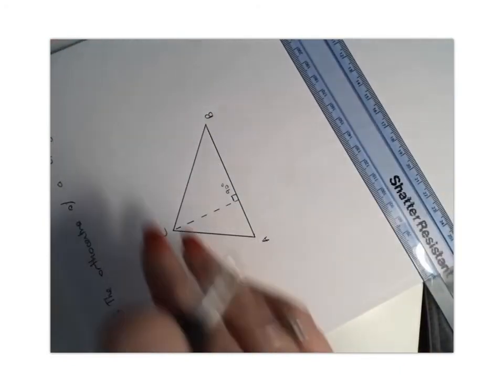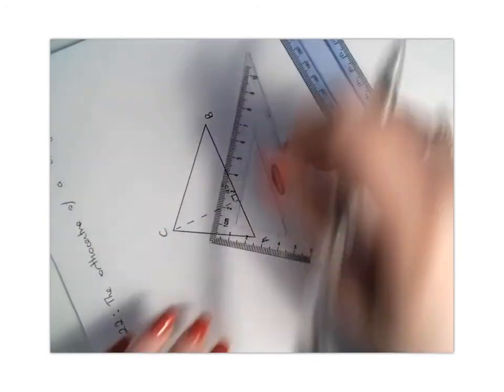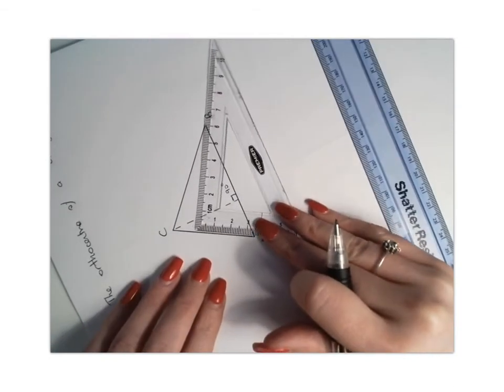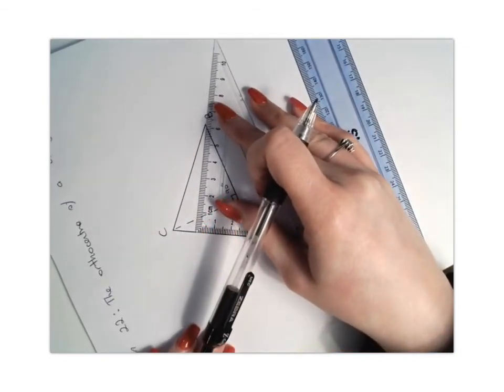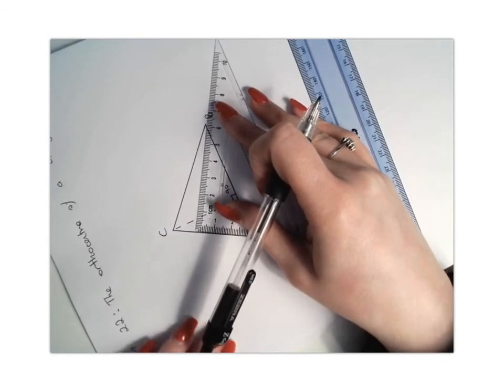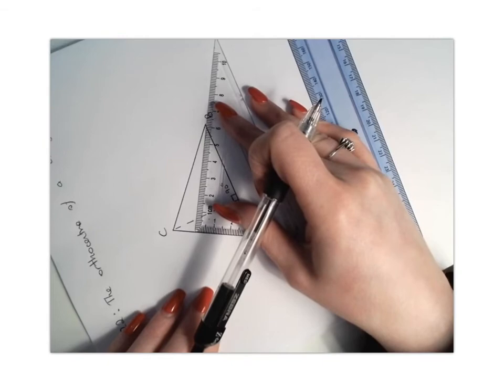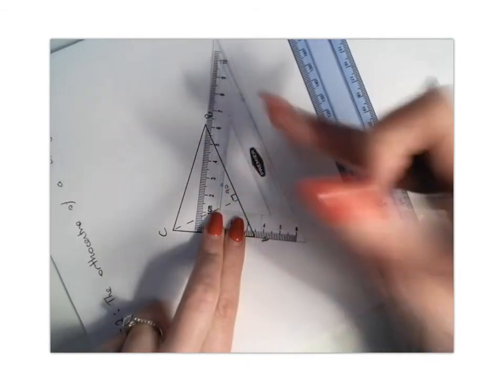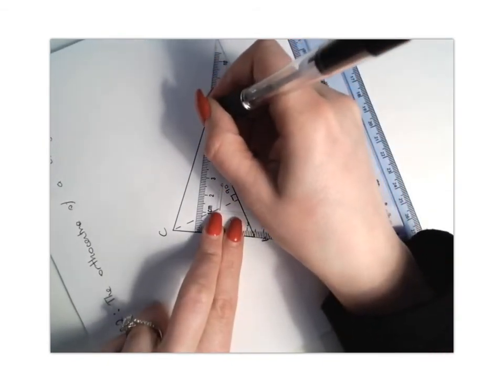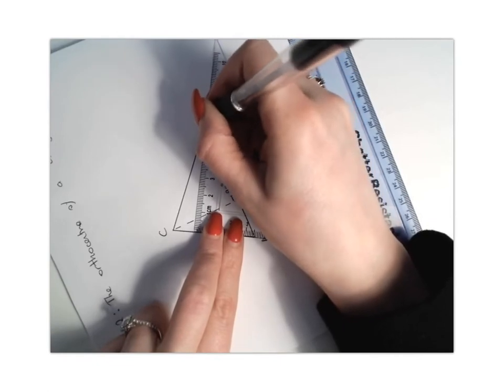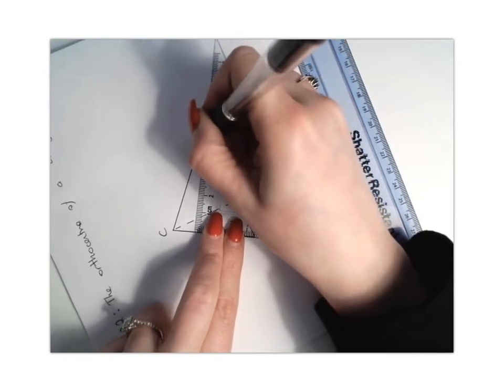I'm going to have to get my set square again and this time I'm going to place it along my line AC and I want it to go through the point B. So again, I'm going to place it here so I've made my 90 degree angle and I need to make sure that it's going to pass through that point B a little bit more and so we're going to draw our line going down.